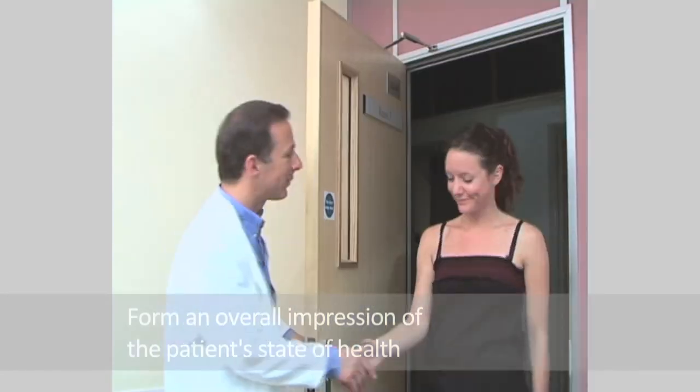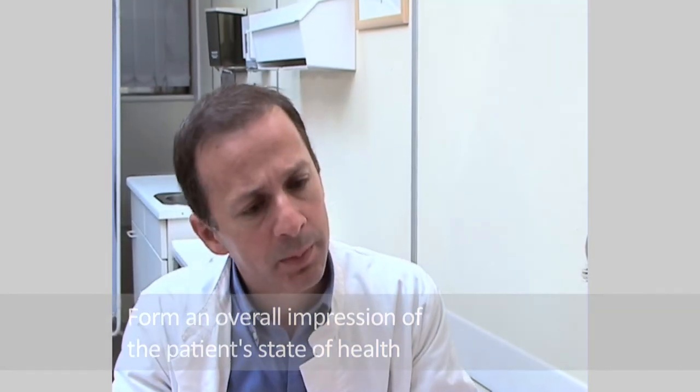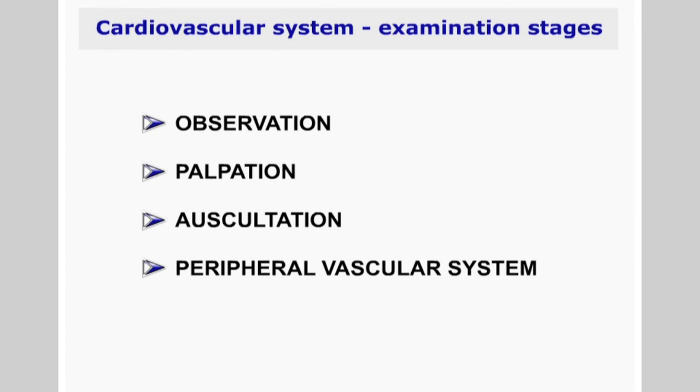Like all other systems, examination should always begin with an assessment of the general appearance of the patient. By this stage you should have formulated an overall impression of the patient's state of health. This is done throughout your encounter with the patient, from the moment they enter your practice, through your case history taking, and from the general examination procedure. It helps to memorize the procedure as four distinct steps: observation or inspection, palpation, percussion, and auscultation.